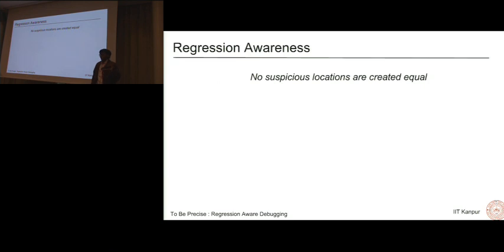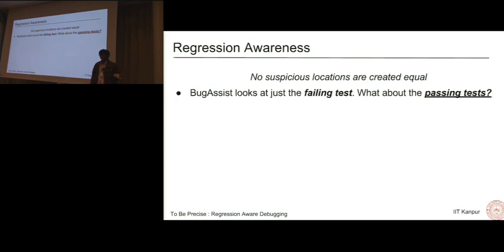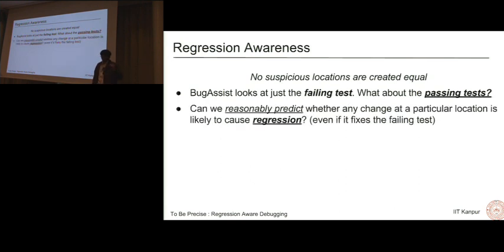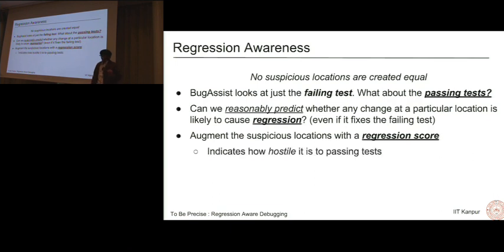The thing to notice is that not all suspicious locations are created equal. For BugAssist, it just looks at that failing test. All the locations it gets can actually fix the failing test. But what about the passing tests? We're disregarding crucial information in that case. Can we reasonably predict whether any change at a particular location is likely to cause regression, even if it fixes the failing test? The intuition is that since we are relaxing a statement, instead of assigning a random value, can we have much more information as to how we pick that random value to fix the failing test?